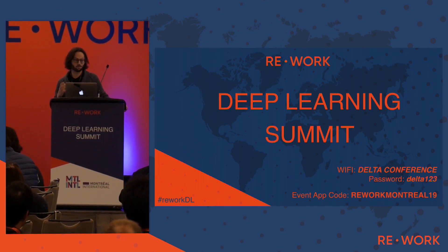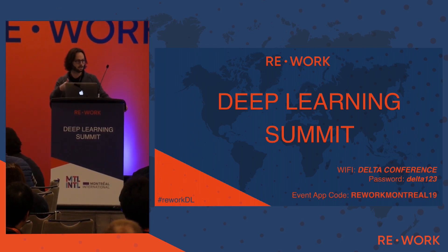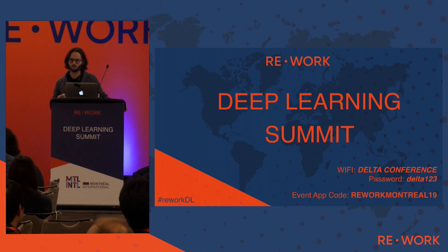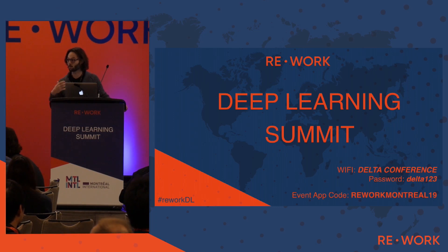Few-shot learning is really about solving this very practical application—if it were that easy to create a classifier, many people without machine learning experience could use it. But there's also something deeper: we can learn about what makes it difficult for machines to generalize to new tasks from very small amounts of examples, whereas humans can do so naturally.